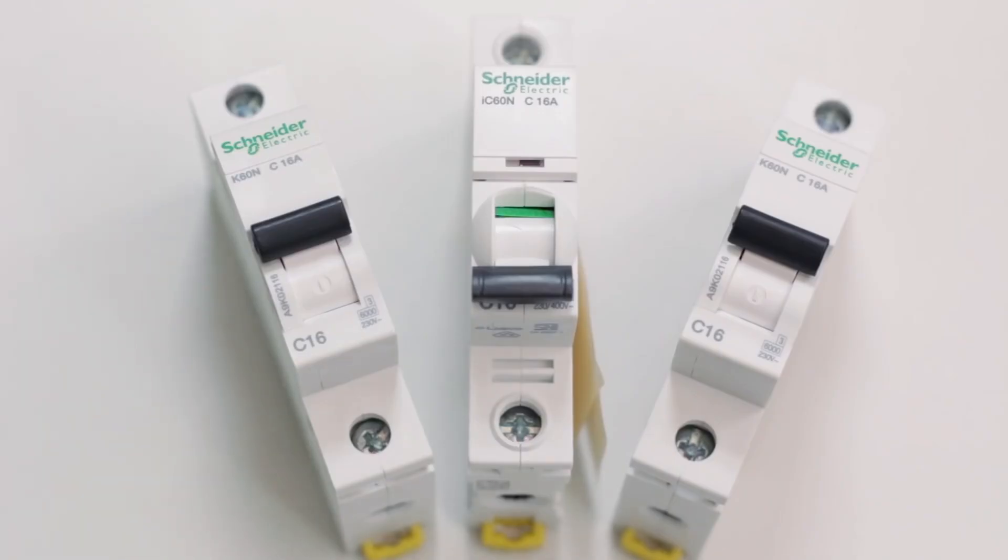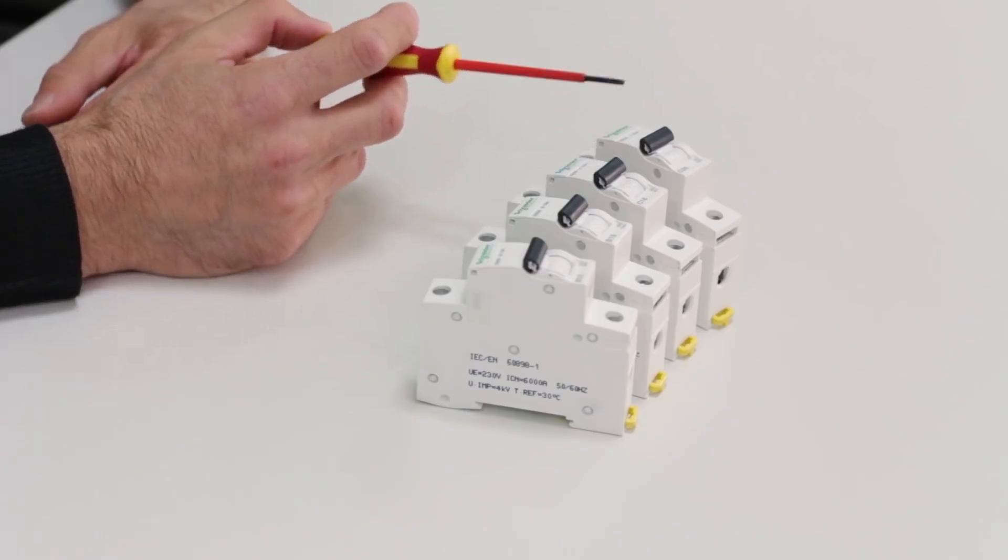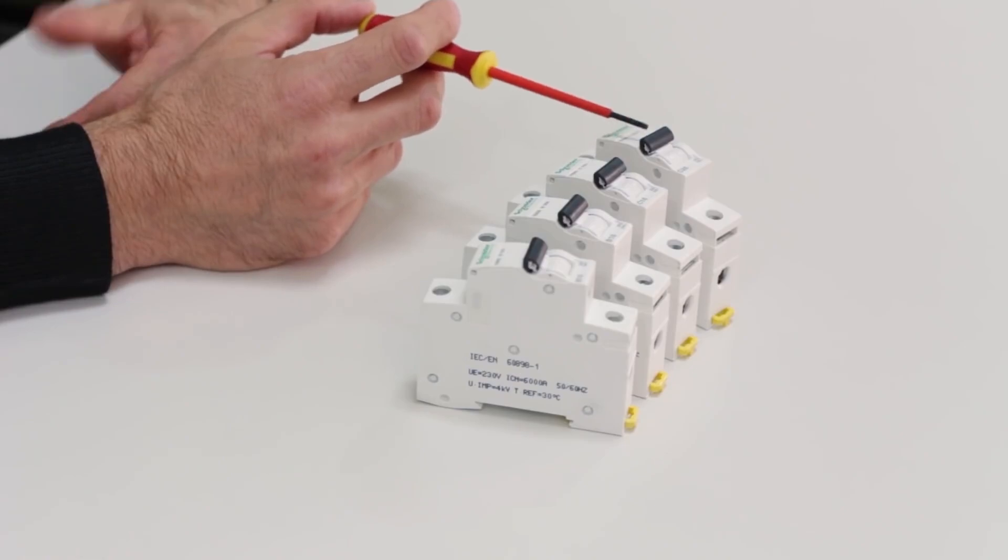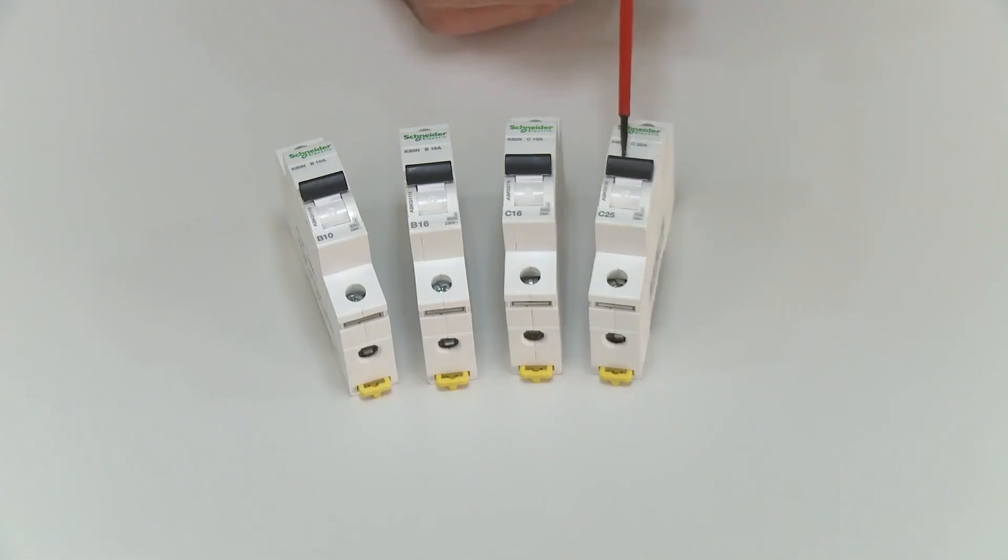In the measuring distribution cabinet from where the switchboards in the apartment are powered, circuit breaker curve C of 25 A will be placed. This is the so-called limited current and they serve to protect the power supply cable leading to the apartment modular enclosure.